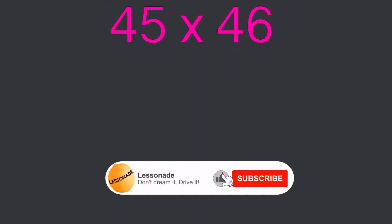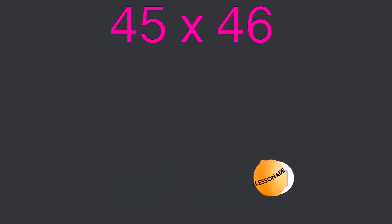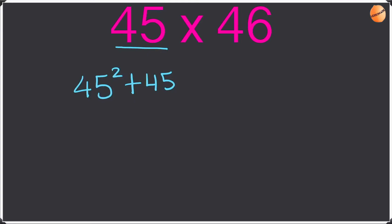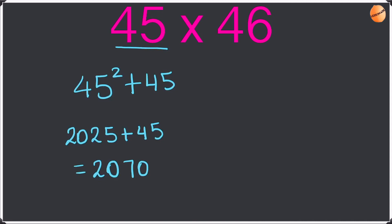So the next example is 45 times 46. With this I'm going to work out using the smaller number, and you guys are going to work out using the larger number — so pause the video and work out the larger number. Okay, smaller number is 45. So we're first going to do 45 squared, and then add the smaller number: 45 squared plus 45. So 45 squared is 2025. Now we add 45, and if you're wondering how I did that so quickly, I've got a video on how to square numbers that end in 5 — the link is in the description below. So 2025 plus 45 is going to be 2070. So the answer for 45 times 46 is 2070.